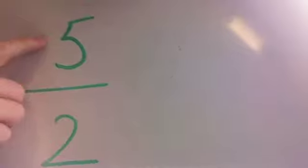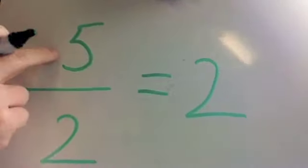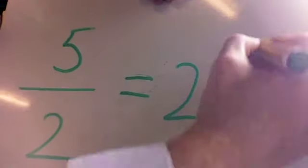How many 2s go into 5? Well, the answer equals 2. 2 lots of 2 go into 5, and we have 1 left over.